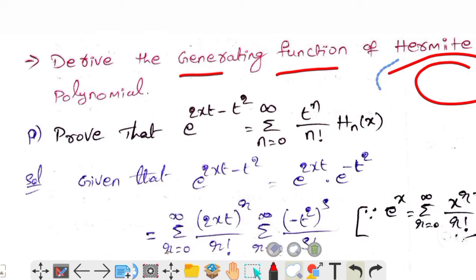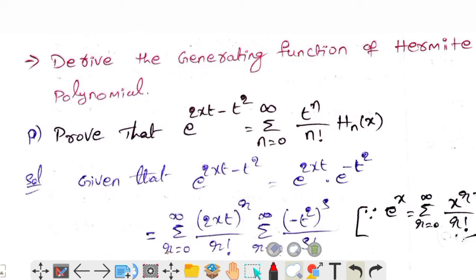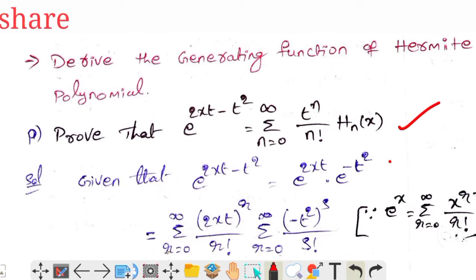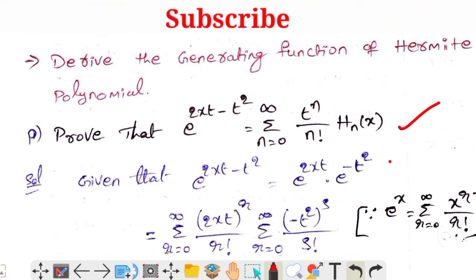We are going to start the class on the generating function of Hermite polynomials, and prove that e^(2xt − t²) equals the summation from n equals 0 to infinity of t^n divided by n factorial, into Hn(x).